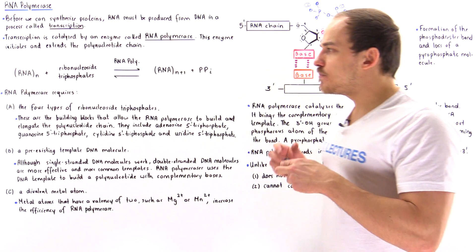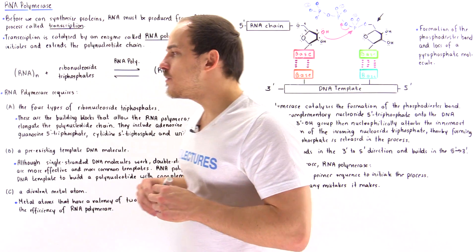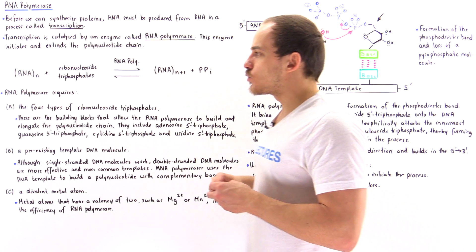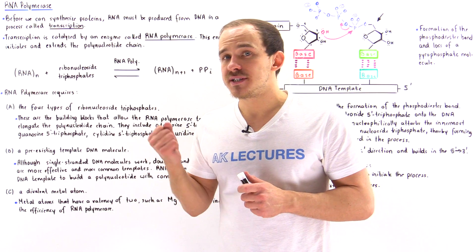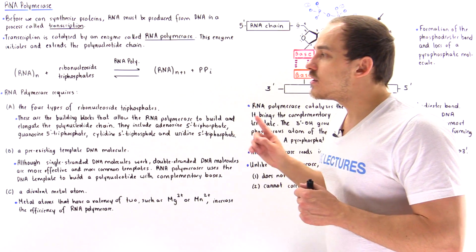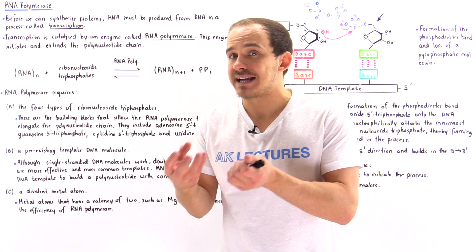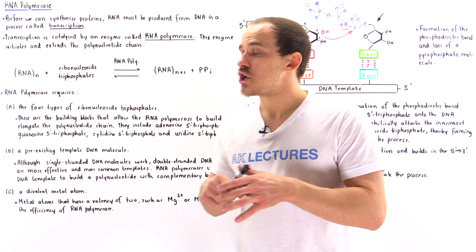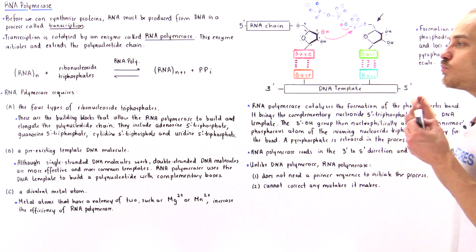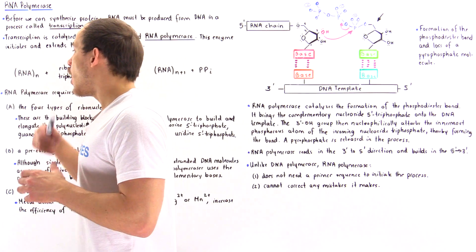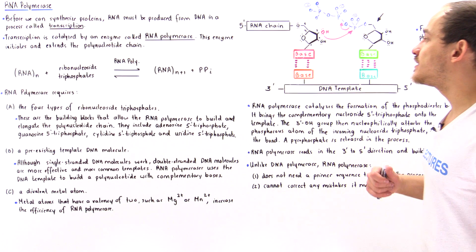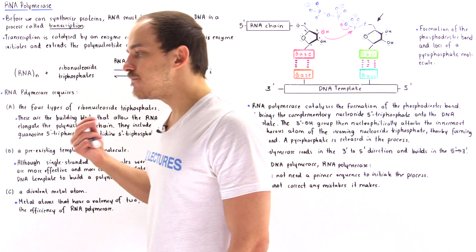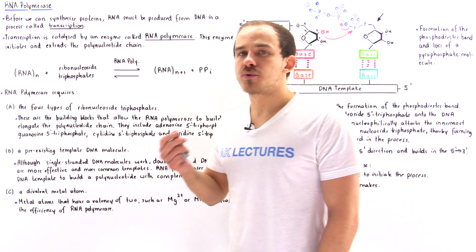The difference between RNA polymerase and DNA polymerase is that RNA polymerase does not need a primer sequence to initiate the process. In DNA polymerase, we said that DNA polymerase requires a primer sequence, but RNA polymerase does not. Unlike DNA polymerase, which has endonuclease activity and can correct the mistakes it makes, RNA polymerase cannot correct its mistakes. If it incorrectly pairs up two bases, it cannot correct that error, meaning RNA polymerase makes many more mistakes compared to DNA polymerase.